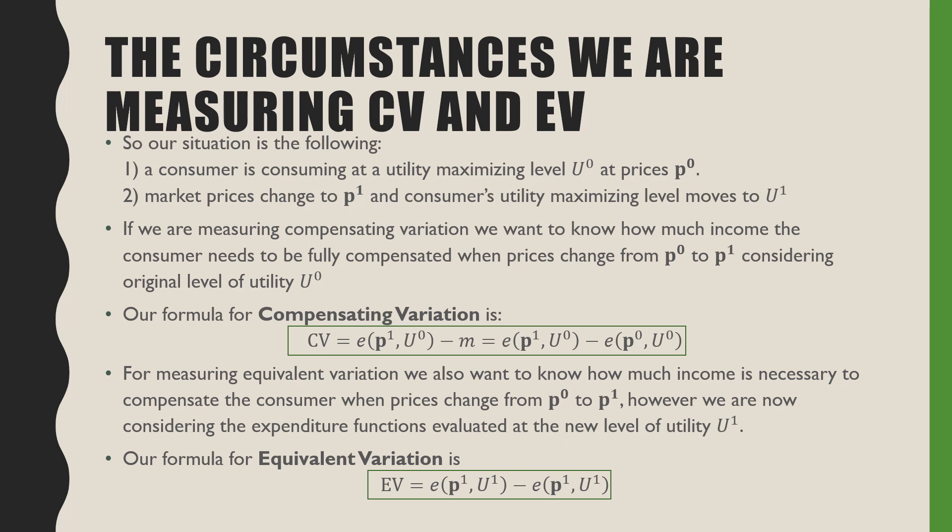If we are measuring the compensating variation, we want to know how much income a consumer needs to be fully compensated when prices change from p0 to p1, considering the original level of utility u0. Our formula for compensating variation is: CV equals our expenditure function evaluated at prices p1 and utility u0, minus our expenditure function at prices p0 and u0.